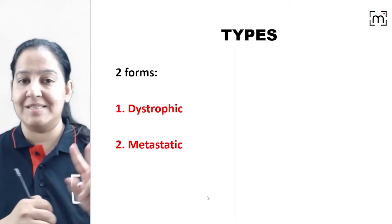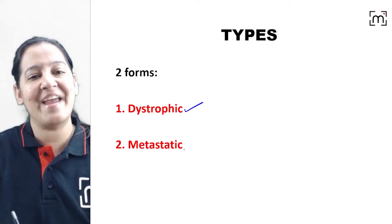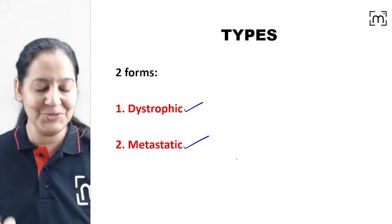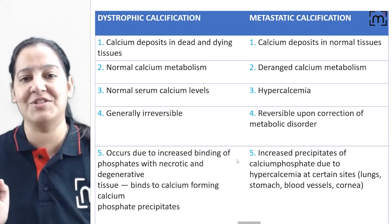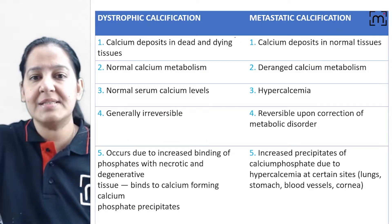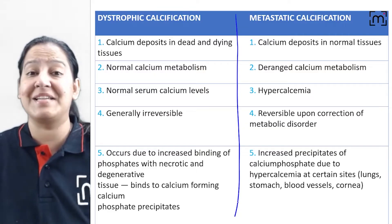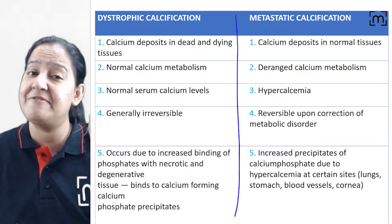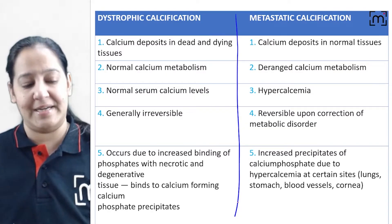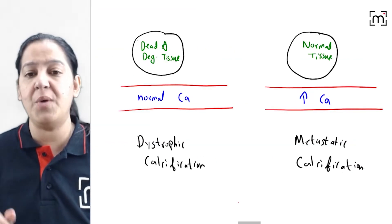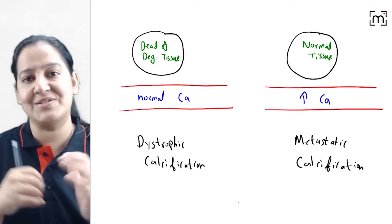There are two types of pathologic calcification: dystrophic and metastatic. You must understand the differences between them — it is very, very important. To understand the differences, let's have a look at this diagram.